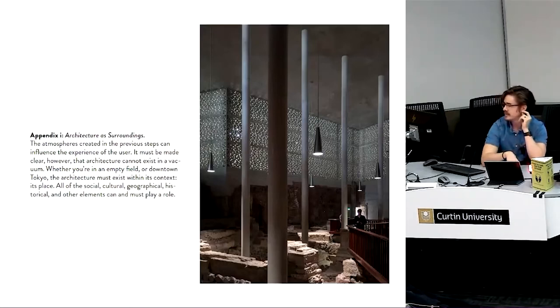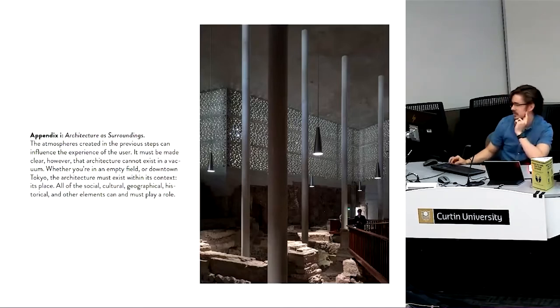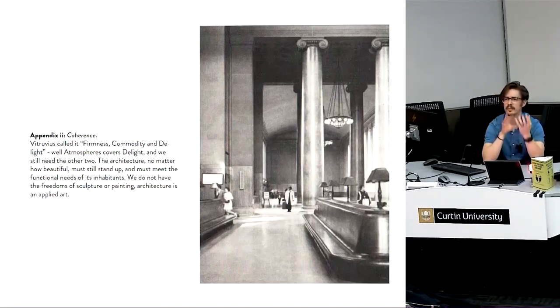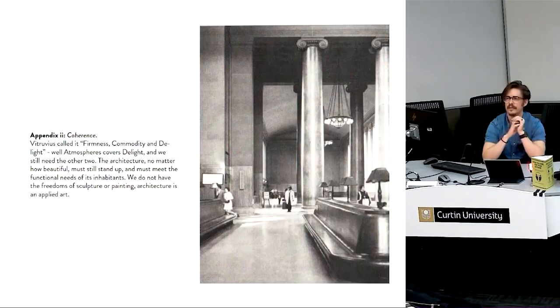So whether you're in an empty field or downtown in Tokyo, the architecture must exist within its context and its place. All of the social, cultural, geographical, historical and other elements play a role. Coherence is the second appendix. Vitruvius called it firmness, commodity and delight. Well, architecture covers the delight portion of that. We still need the other two. So architecture, no matter how beautiful, must still stand up and must still meet the functional needs of its inhabitants. We don't have the freedoms of sculpture or painting. It still has to work. So we're not creating sculpture here. This isn't a free-form art. All it has to do is be art. We're also subjugated to the fact that it must work. It must meet the needs of the program and the function.